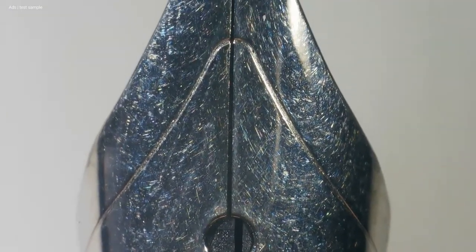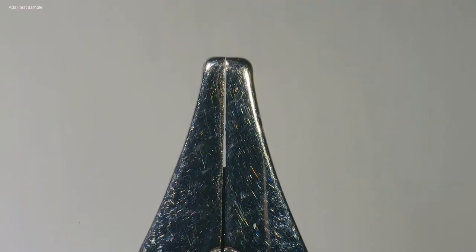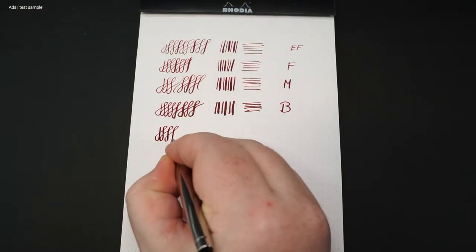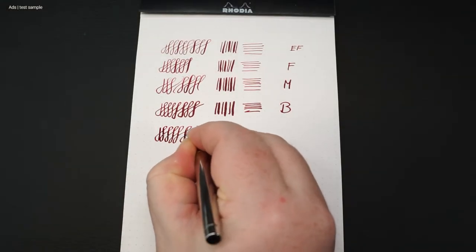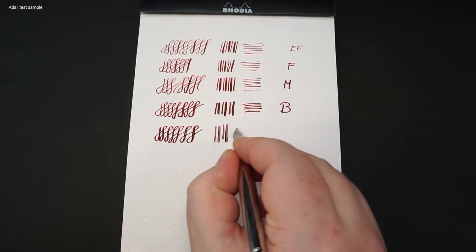Now we come to the area of the so-called calligraphy nibs. These are stub nibs. Here the 0.8 nib. This one not only has a little flex, but the stub behavior is already quite evident in the writing.